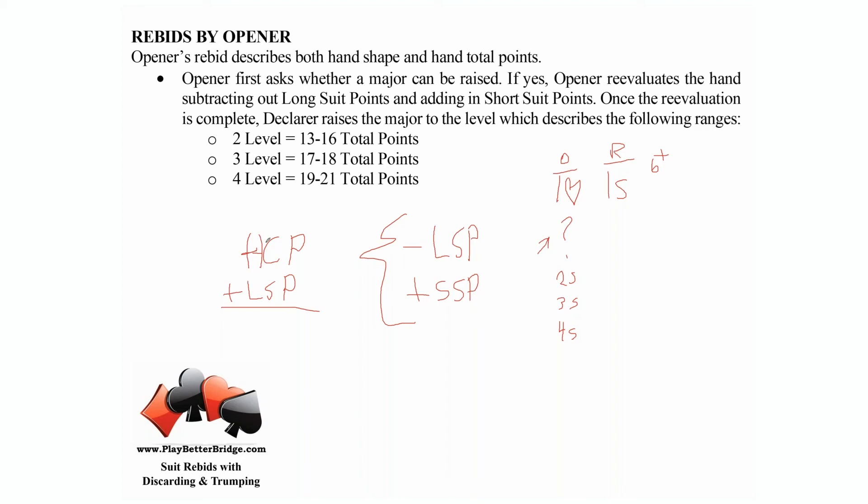The general rule is high card points plus long suit points. If you find yourself about to raise your partner's major, you need a little alarm to go off. Re-evaluate: instead of those long suit points you counted in the beginning, subtract those out and add your short suit points.